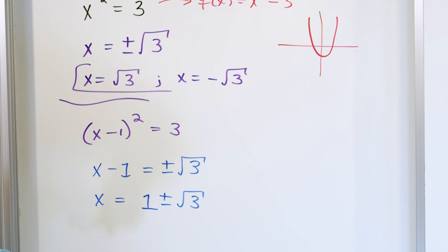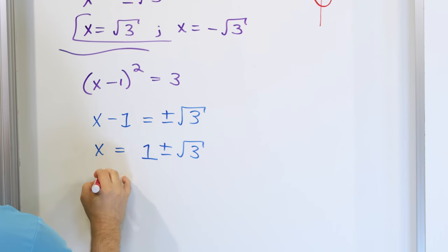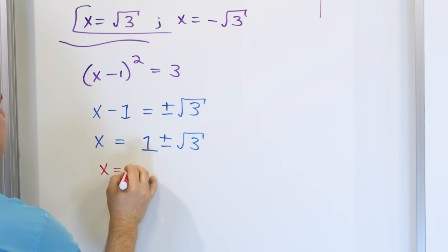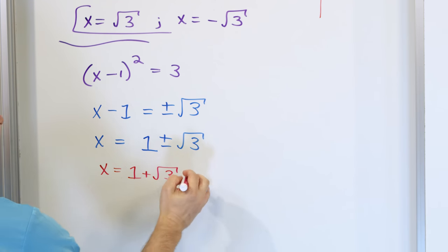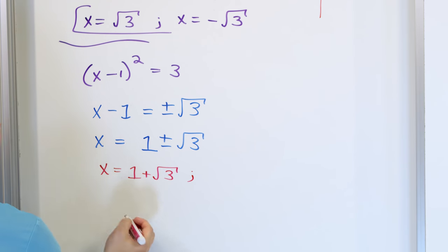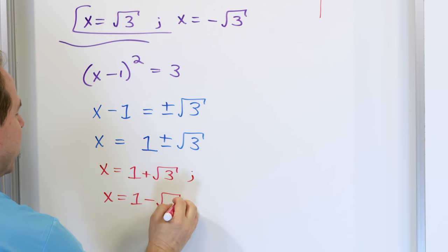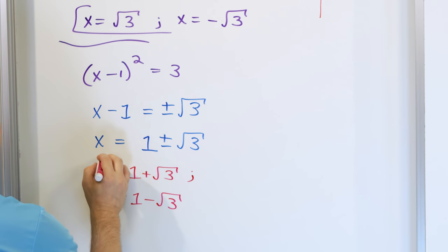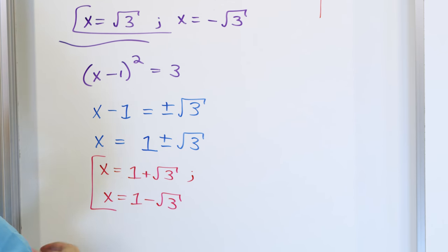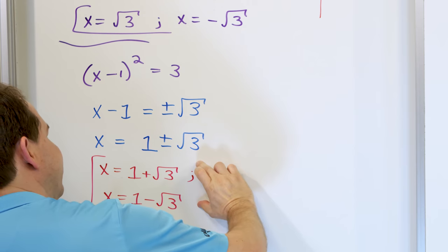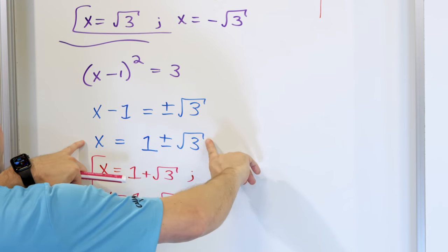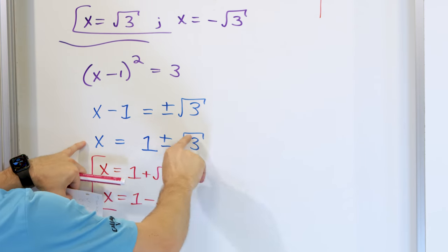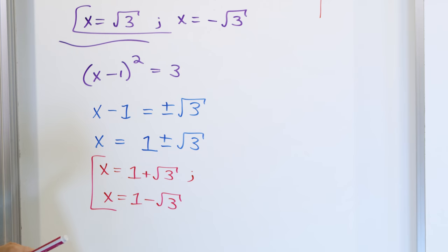Then we need to move the 1 to the right-hand side by adding it, so we get x = 1 plus or minus square root of 3. This means there are two distinct solutions: the first is 1 plus square root of 3, and the other is 1 minus square root of 3. You can circle it as two separate answers, or with the plus minus notation.